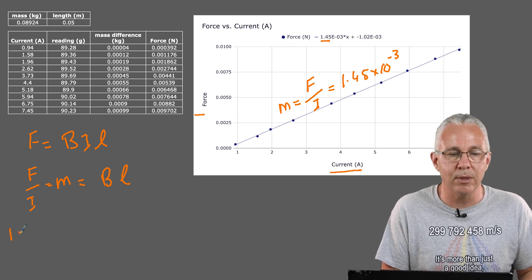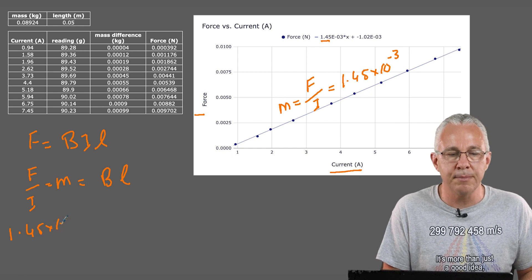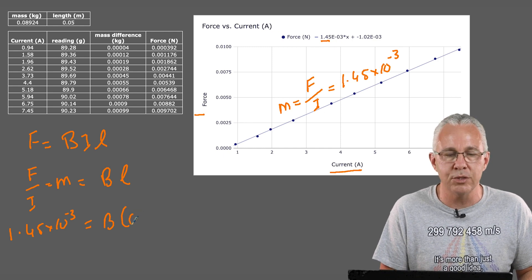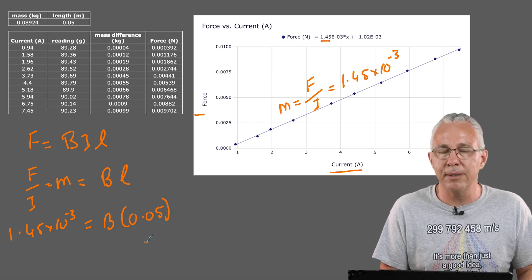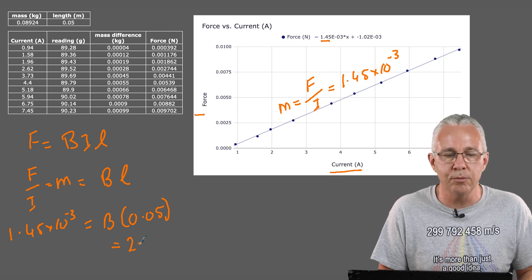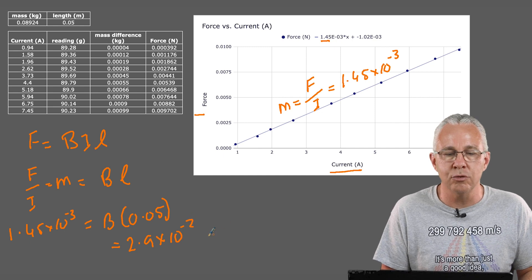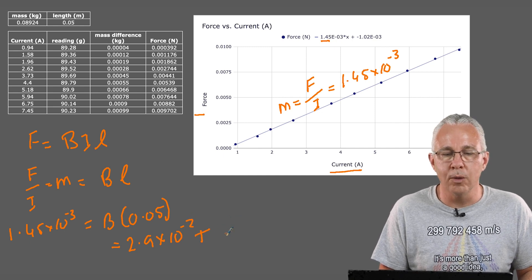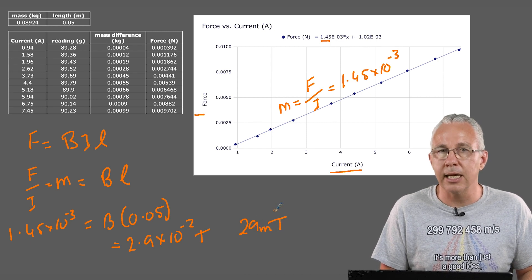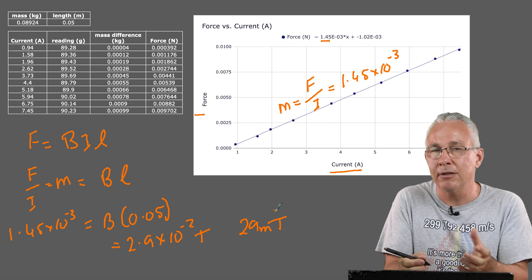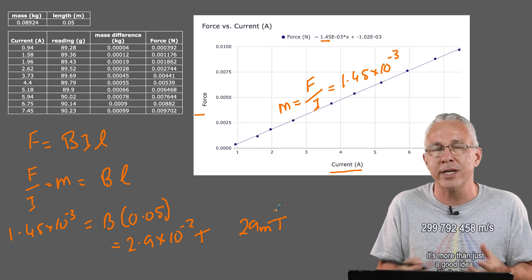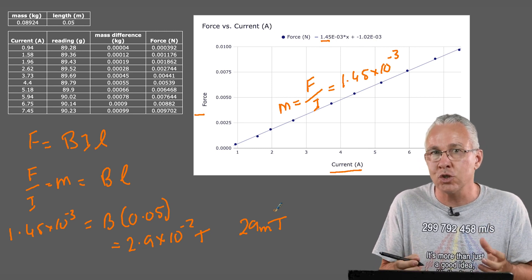Now you can see here our m is given for us. So what we have is 1.45 by 10 to the power of negative 3 is equal to our magnetic field strength multiplied by the length, which is 0.05. And so now it becomes really easy to work out. You rearrange that, and you get 2.9 by 10 to the power of negative 2 tesla, or what we can say it's equal to 29 millitesla. And so there you have it: you can use our simple effect of our magnets and our bar to actually measure the strength of the magnetic field, not just qualitatively but quantitatively as well.